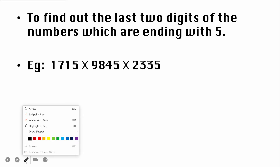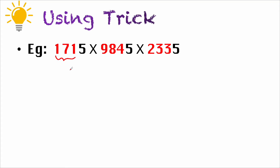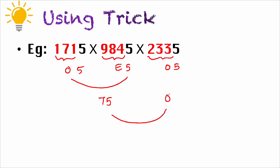Let's apply this trick to the previous question. Observe the digits before 5 in each number: the first number is odd ending with 5, the second is even ending with 5, the third is odd ending with 5. Odd×even → last two digits are 75. Now multiplying by the next odd number (7 is odd), odd×odd → last two digits are 25. Answer is 25 directly.